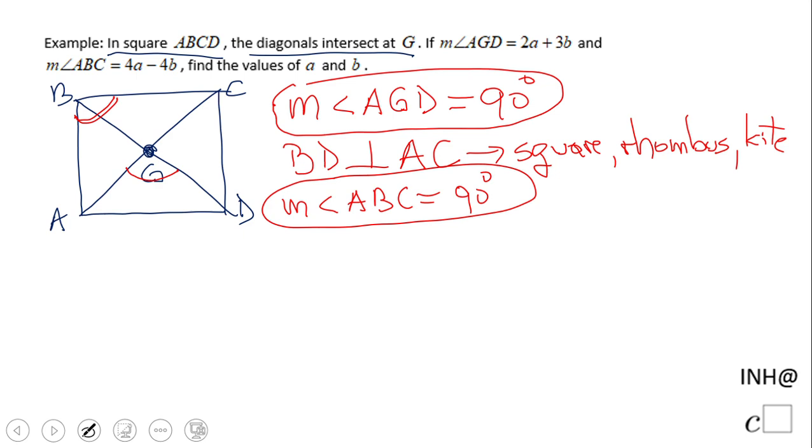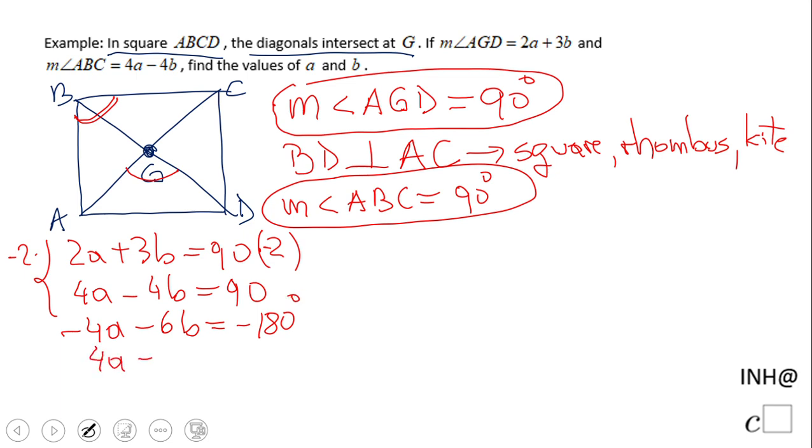Angle AGD, which is 2a plus 3b, equals 90. The other equation is 4a minus 4b equals 90. This is a system of equations. I'm going to multiply the first equation by negative 2, so we have negative 4a minus 6b equals negative 180. The second equation, 4a minus 4b equals 90, stays the same. I'm using elimination so these terms cancel out.